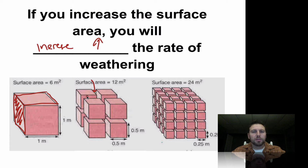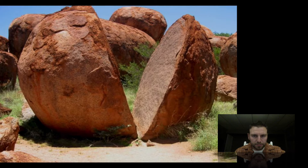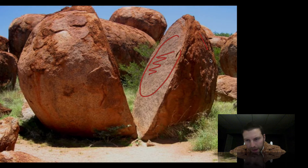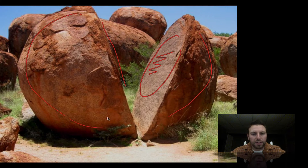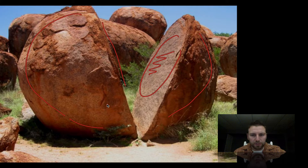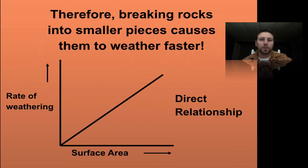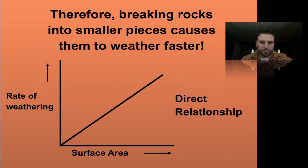As we increase surface area by taking the same volume and breaking it into more pieces, we increase the rate of weathering, since more surface is exposed. For example, this rock was one whole piece — now it's split apart and all those new surfaces can be weathered. Increasing surface area increases our rates of weathering, so breaking rocks into smaller pieces causes them to weather faster — a direct relationship.